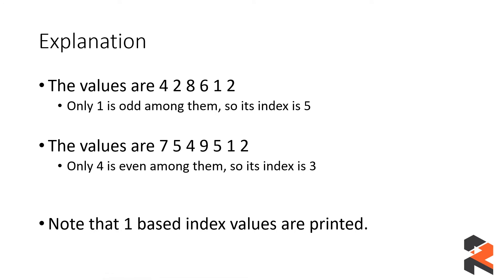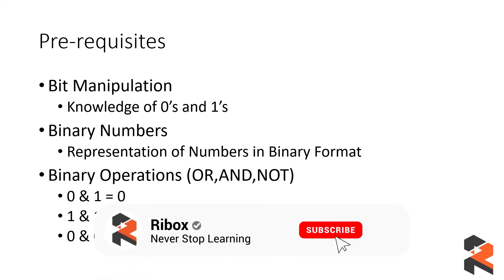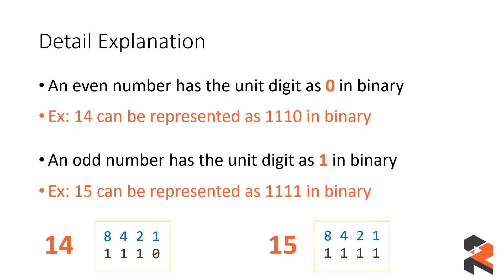To solve this problem you need to understand some concepts, since it is an intermediate-level problem. First is bit manipulation — you need to know how to manipulate bits. Second is binary number representation; for example, the number 2 is represented as '10' and the number 3 as '11' in binary. Third are binary operations: OR, AND, and NOT.